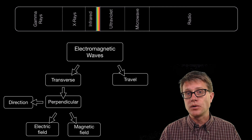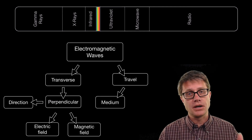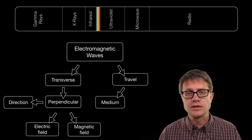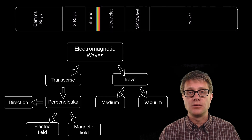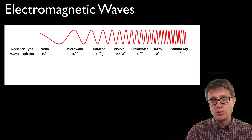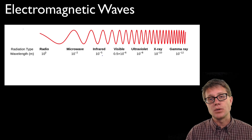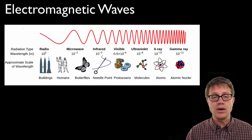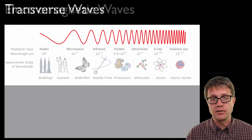Electromagnetic waves can travel through a medium — light can move through water, and radio waves can move through the walls of a house. But they can also move through the vacuum of space. As we move towards high energy gamma rays, wavelength is decreasing but frequency is increasing. Radio waves have really long wavelengths around the size of a building, whereas gamma rays would be more the size of an atom.